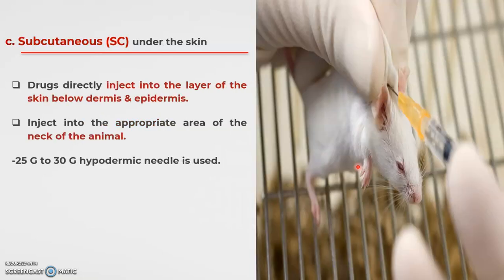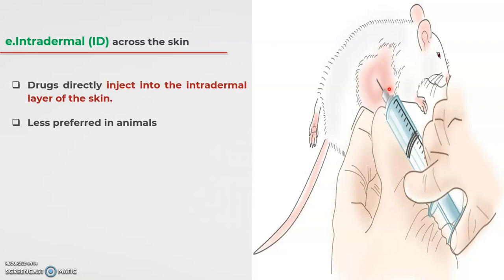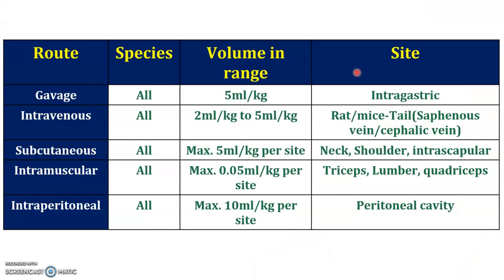For the subcutaneous route, the drug is administered below the dermis and epidermis layer. The exact site is the skin in the neck region — you pinch the skin and insert the needle into it. For the intradermal route, the drug is administered directly into the dermis layer of the skin. The last route is the topical route — local application directly applied to the surface of the skin. These are the three different route classes.